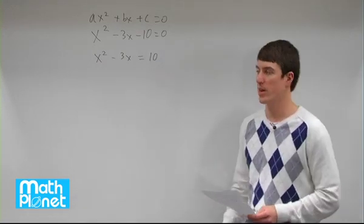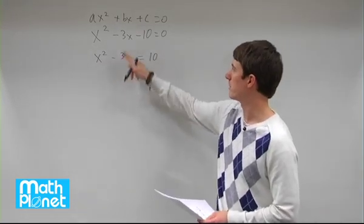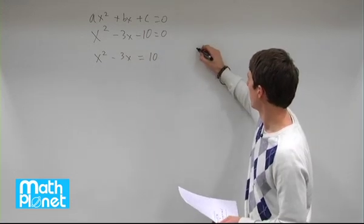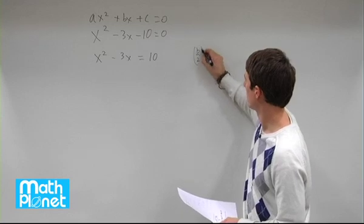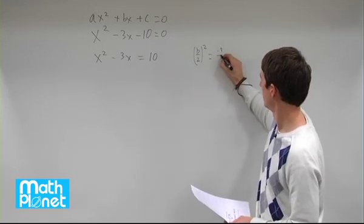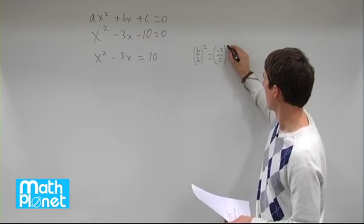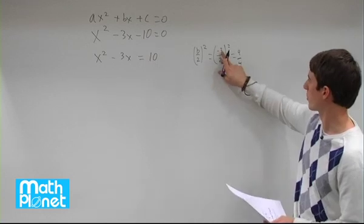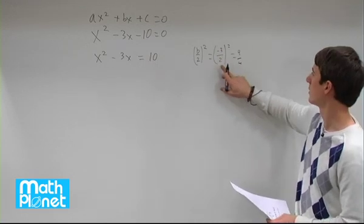Now the second thing we want to do is take this b term, divide by 2 and square it. So we're going to find b over 2 squared. So b is negative 3 over 2, and we square that. So that gives us 9 over 4. Negative 3 squared is 9, 2 squared is 4.